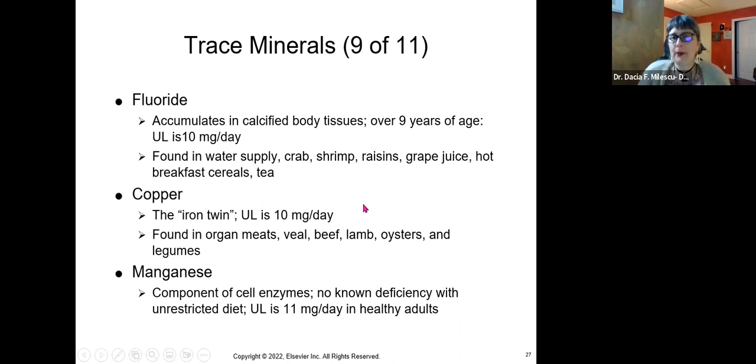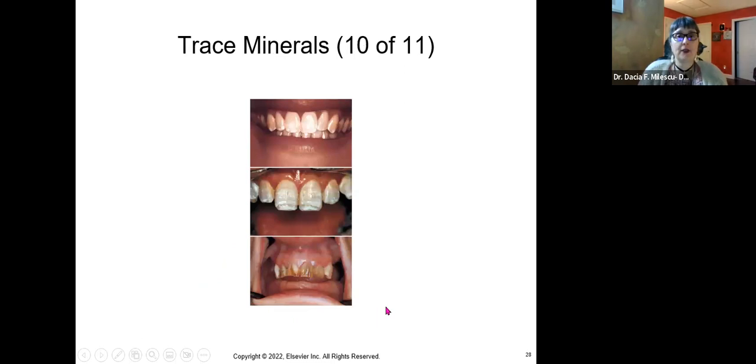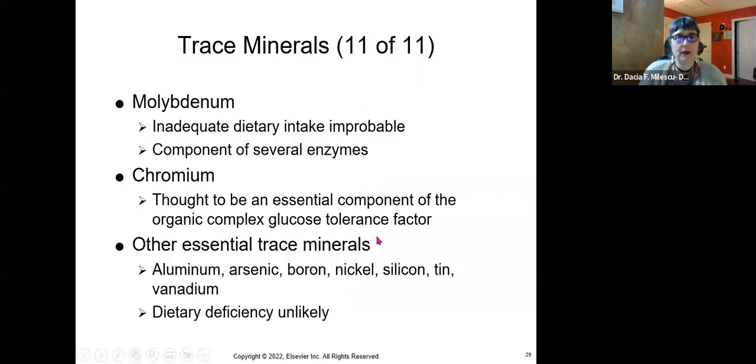Copper. Never thought of copper that you needed, but yes, we do have some copper in our blood. Very little amount. This is the upper limit is 10 milligrams a day and where do you get it from? Again, you need a certain amount, up to 10 milligrams, and you get it from organ meats, veal, beef, lamb, oysters, and legumes. The next one is manganese. This one is a component of cell enzymes. There's no known deficiency with unrestricted diet. And the upper limit is only 11 milligrams per day in healthy adults. So this is what happens when you're not getting enough minerals. Your teeth will pay the price. So get your minerals in.